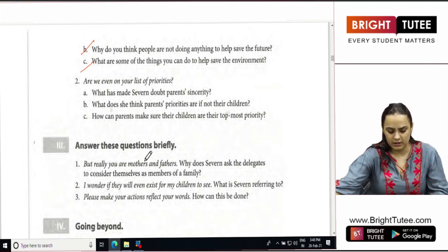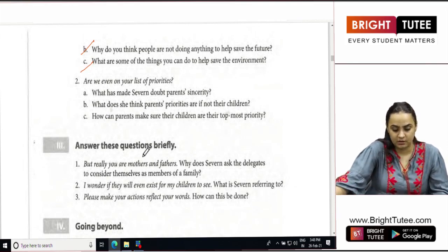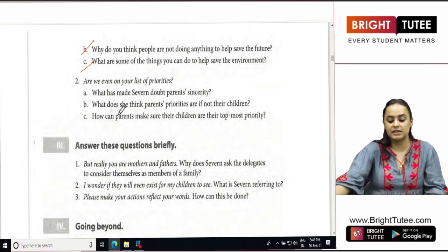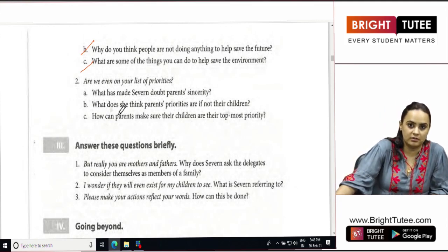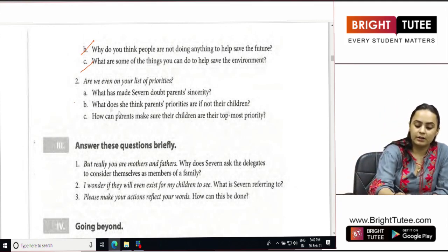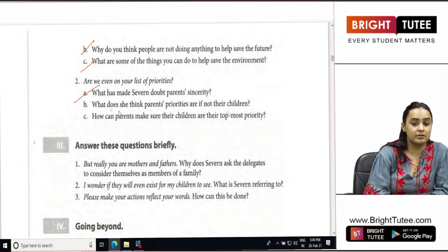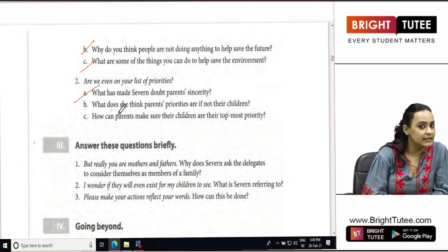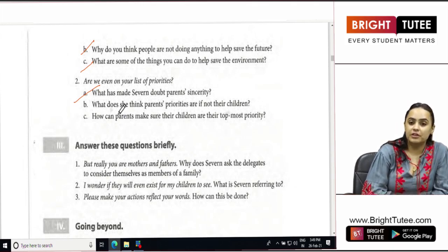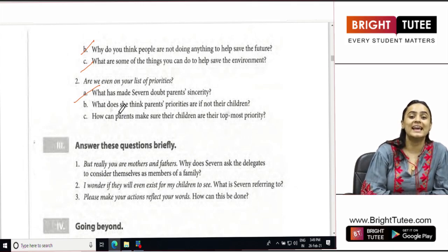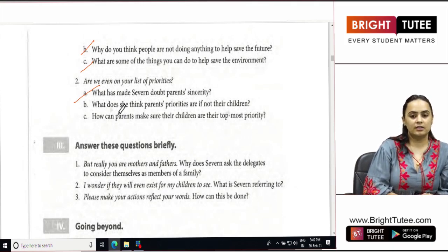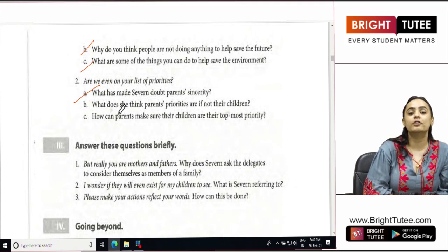Are we even on your list of priorities? What has made Severn doubt parents' sincerity? So why did Severn doubt the parents, whether the children are there on their priority list or not? Because obviously she could not see anything that was being done in the favor of children.